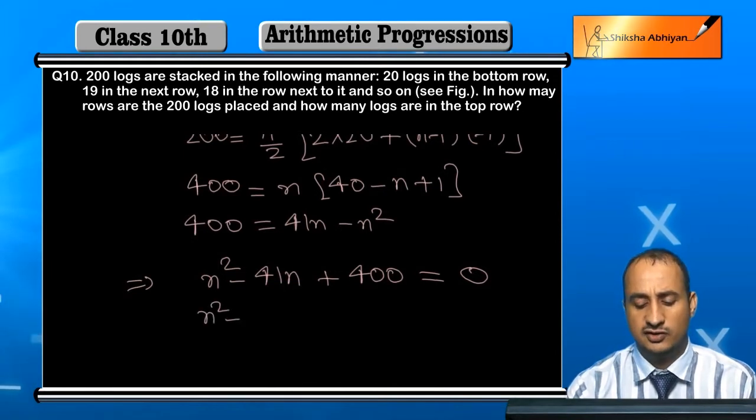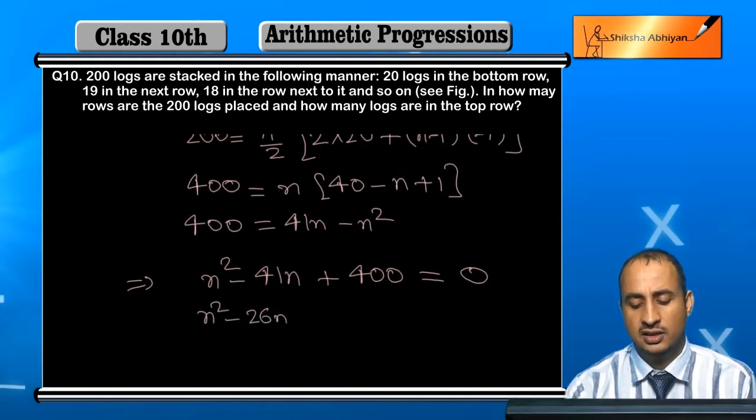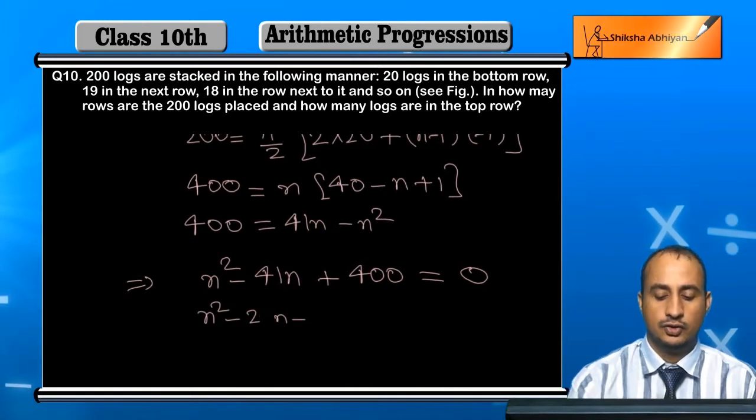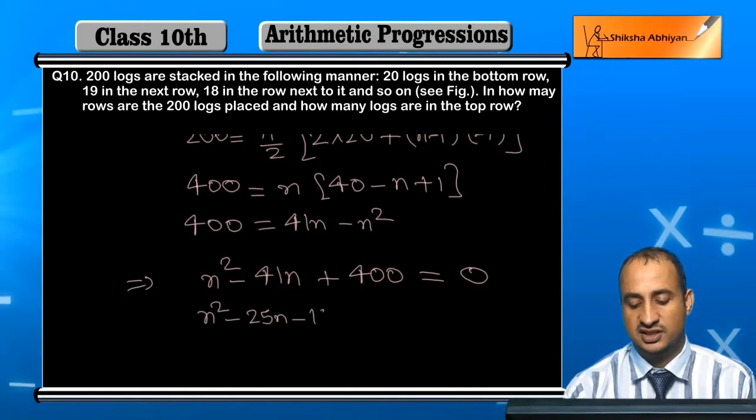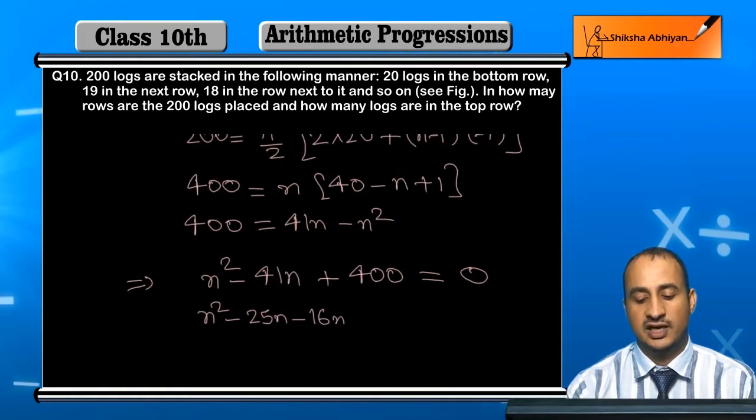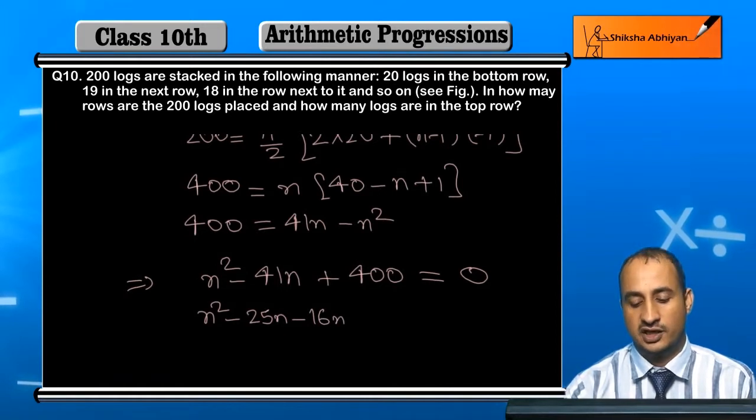So n squared minus 25n minus 16n plus 400. The sum of both 25 and 16 gives 41, and when we multiply them we get 400.